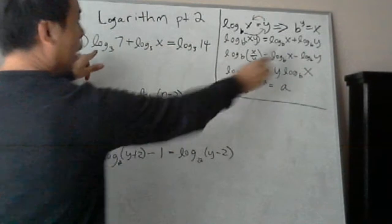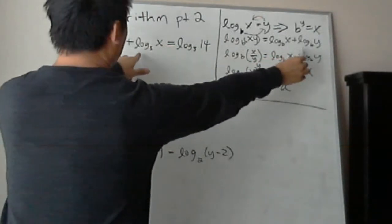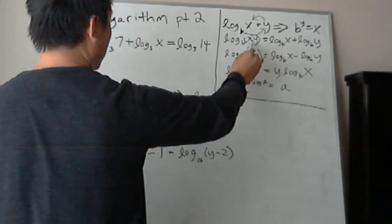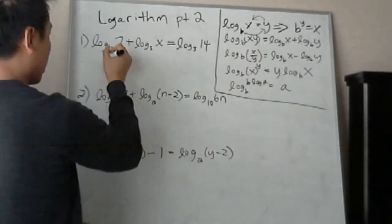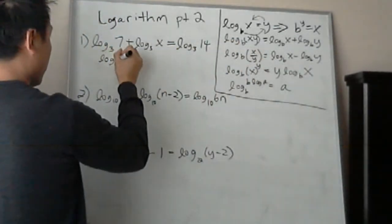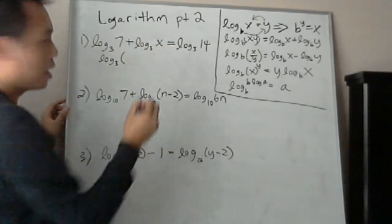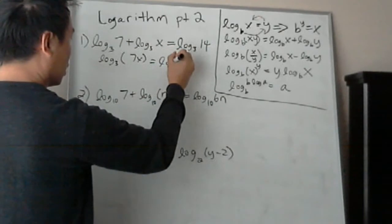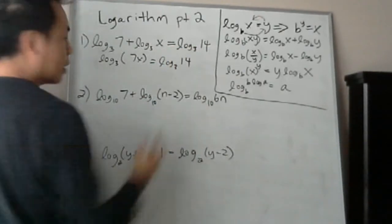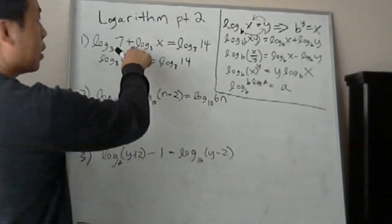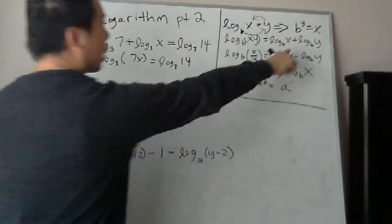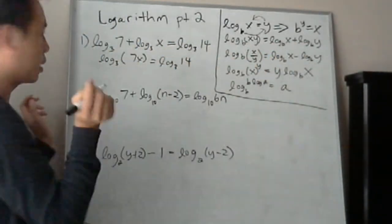So what does it say here is that when you're adding the logarithms, like this, you see how log base 3, 7, plus log base 3, x is kind of similar? You multiply them. You can combine them together. So you can write this as log base 3, 7 times x. See how that works? So you're going from here to here.